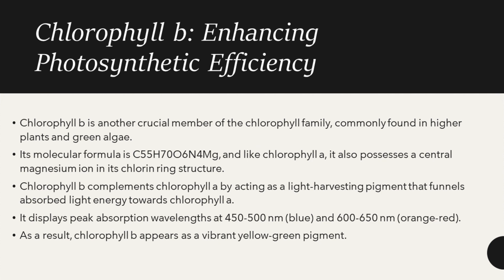Now, chlorophyll B — enhancing photosynthetic efficiency. Chlorophyll B is another crucial member of the chlorophyll family, commonly found in higher plants and green algae. Its molecular formula is C55H70O6N4Mg.